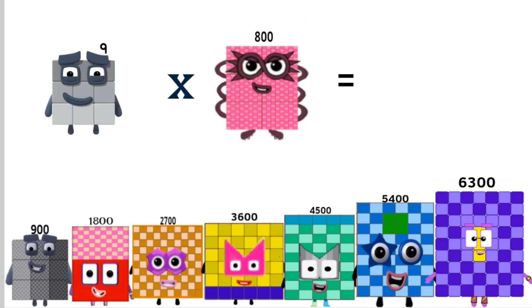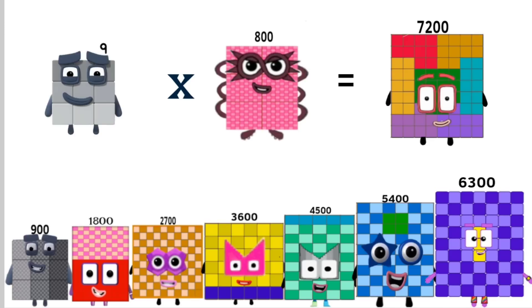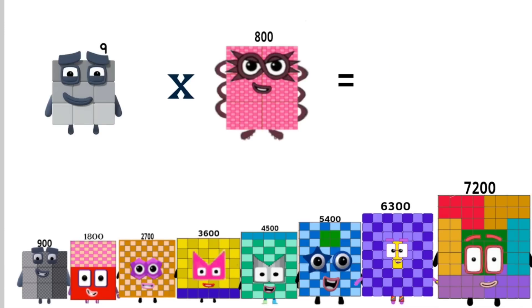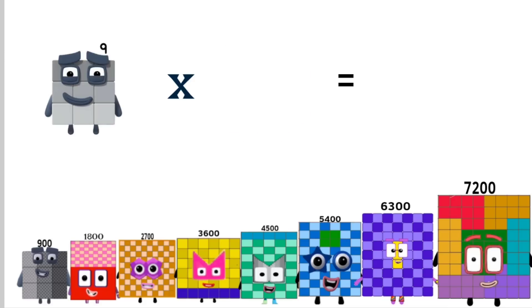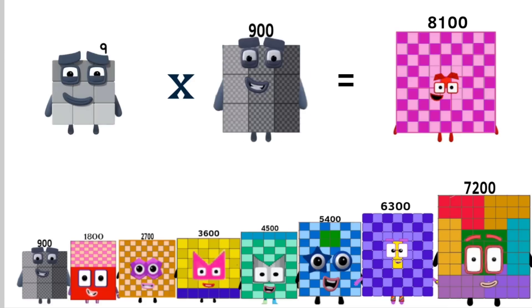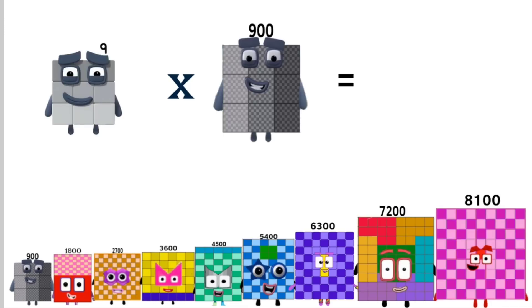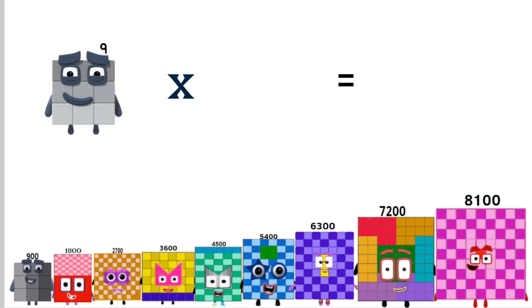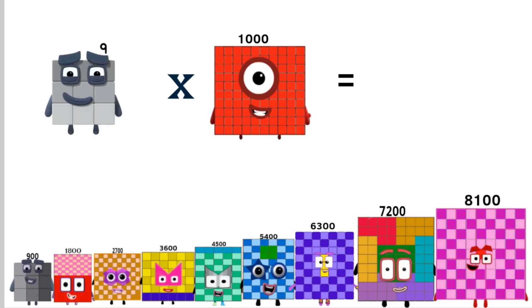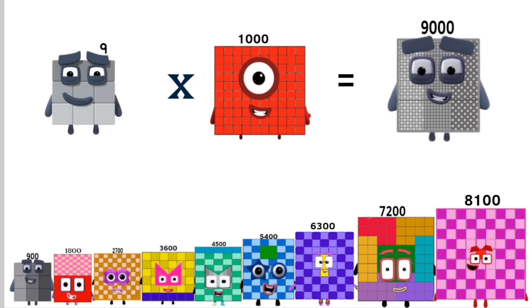Times 800 equals 7,200. Times 900 equals 8,100. Times 1,000 equals 9,000.